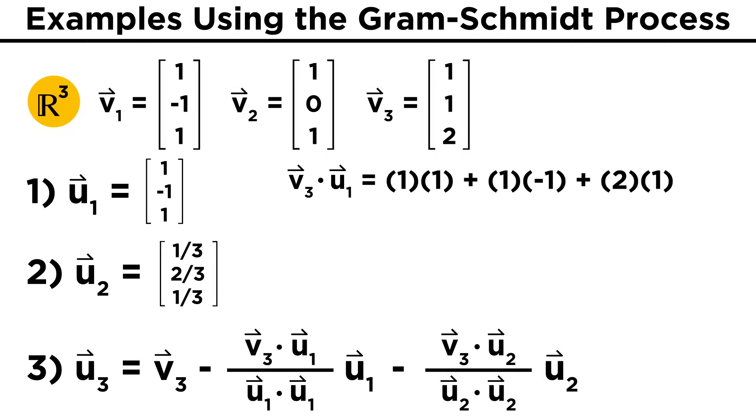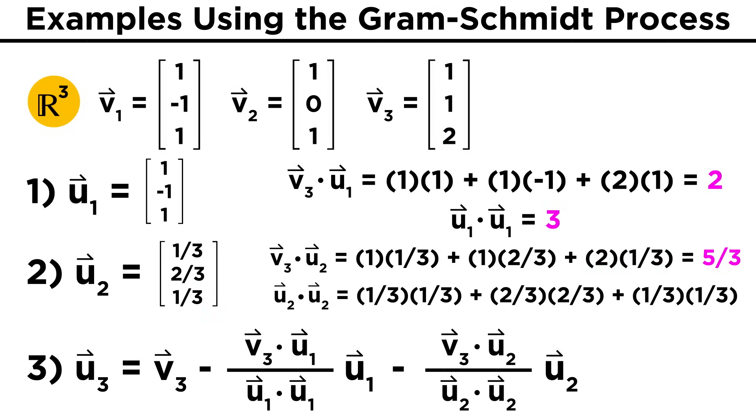Now simplifying, v3 dot u1 is one times one plus one times negative one plus two times one, which is two. We already know that u1 dot u1 is three, so let's just use that. Then v3 dot u2 is one times one third plus one times two thirds plus two times one third, which equals five thirds. And then u2 dot u2 is one third times one third plus two thirds times two thirds plus one third times one third, which becomes one ninth plus four ninths plus one ninth. This is six ninths, which simplifies to two thirds.